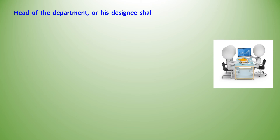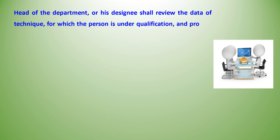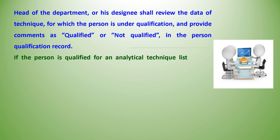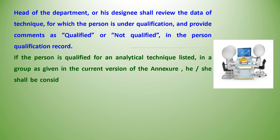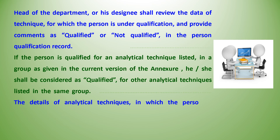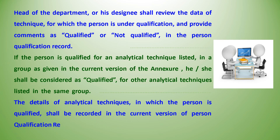The head of department or his designee shall review the data of the technique for which the person is under qualification and provide comments as qualified or not qualified in the person qualification record. If the person is qualified for an analytical technique listed in a group as given in the current version of the annexure, he or she shall be considered as qualified for other analytical techniques listed in the same group. The details of analytical techniques in which the person is qualified shall be recorded in the current version of the person qualification record.